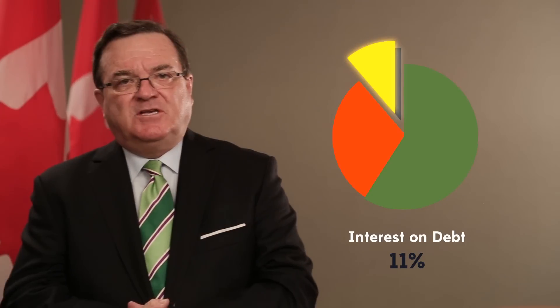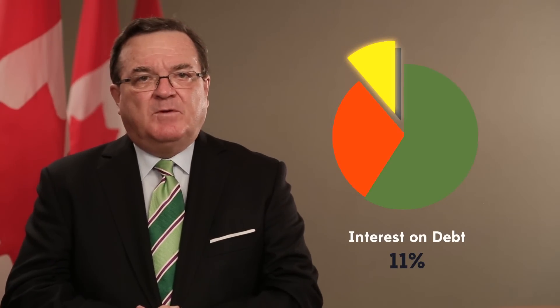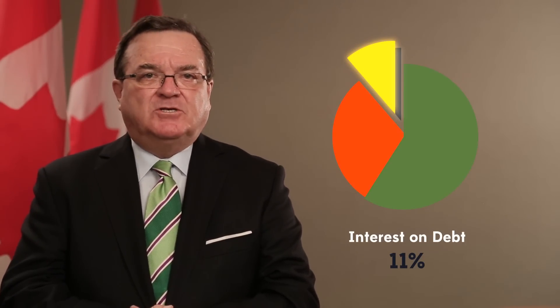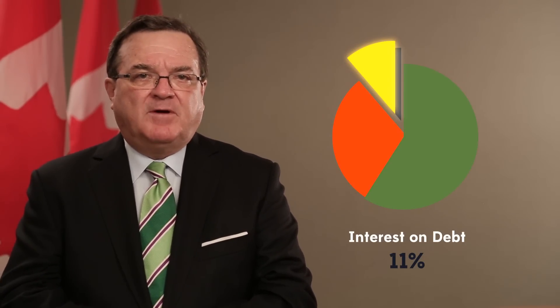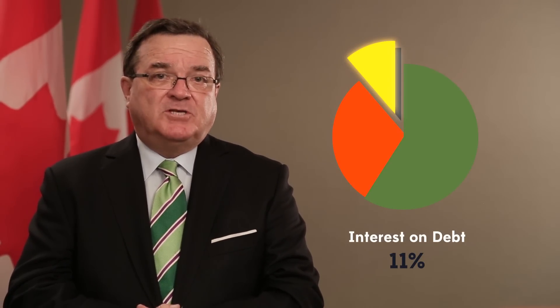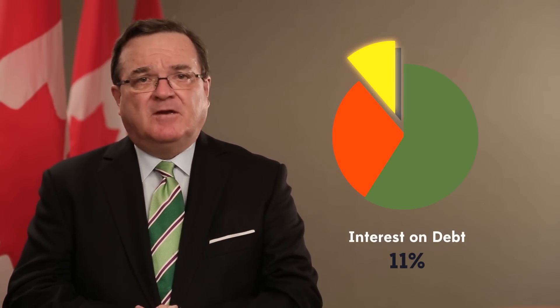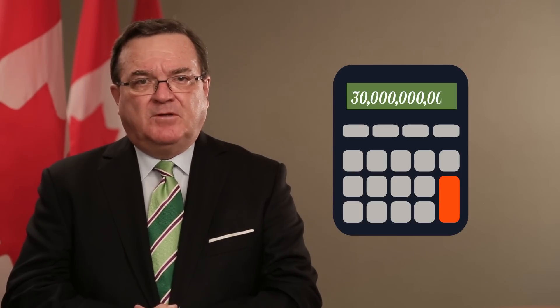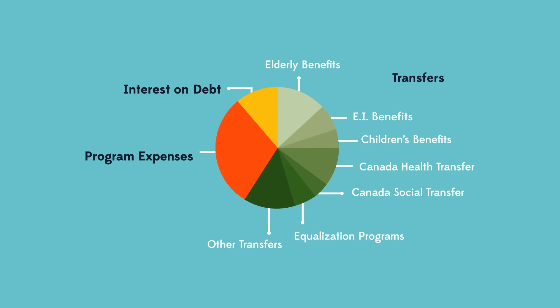The final spending area is interest on the debt. We pay interest charges on the money borrowed by the federal government over the years and not yet repaid. This year our interest payment will be about $30 billion. Now that you have learned where we spend our money, you'll find out where we get it from.